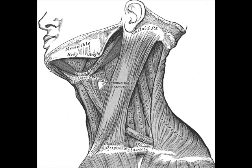Hi, I'm Dr. Dave. The digastric muscle, also digastricus, named digastric as it has two bellies, is a small muscle located under the jaw. It lies below the body of the mandible, and extends in a curved form from the mastoid process to the symphysis menti. It belongs to the suprahyoid muscles group.